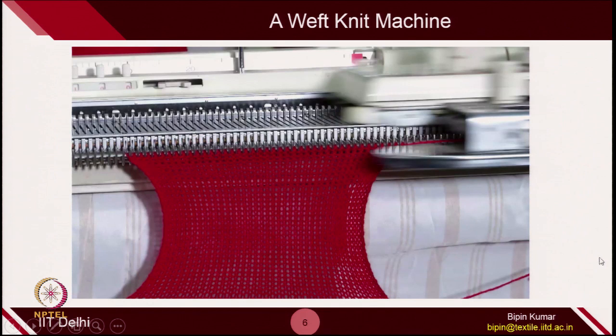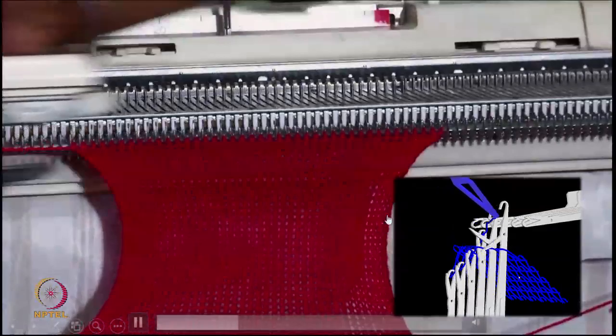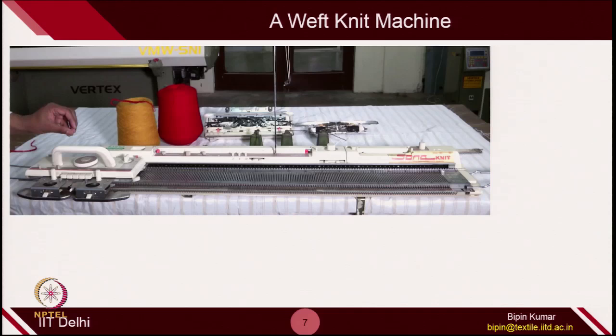This is a simple video of a weft knitting machine which is in our lab. You can see that within a second you are generating more than 20 to 30 loops. This is the fabric which is being pulled out from the bed, and you can see all of these columns of loops are being controlled by each individual needle. Let's go into detail on the machine elements — what exactly is on this particular machine.